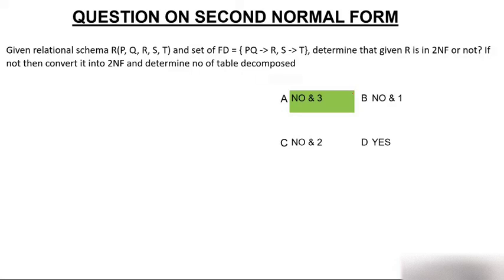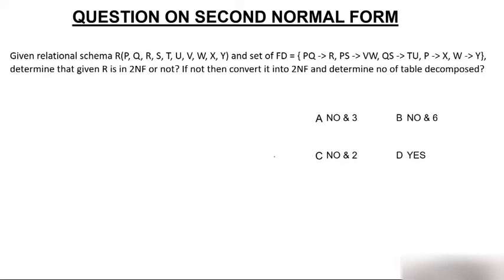Let's start with a different question. Given a relational schema R with attributes P, Q, R, S, T, U, V, W, X, Y and set of functional dependencies: PQ→R, PS→VW, QS→TU, P→X, and W→Y. Determine whether the given R is in 2NF or not. If not, convert it into 2NF and determine the number of tables decomposed.